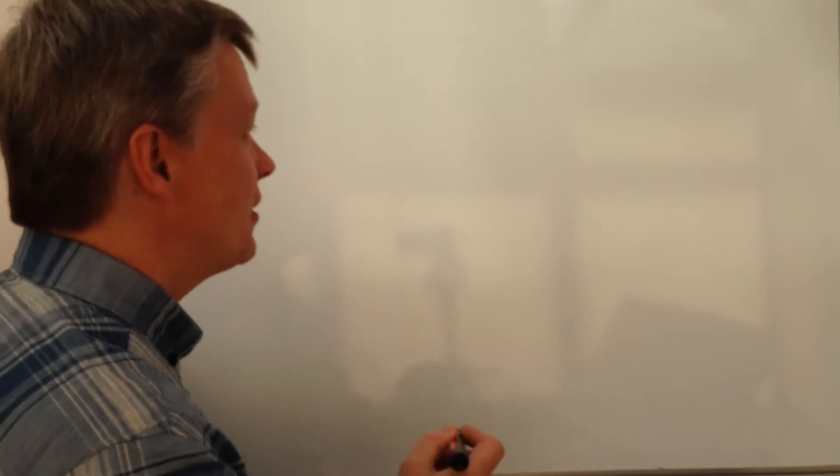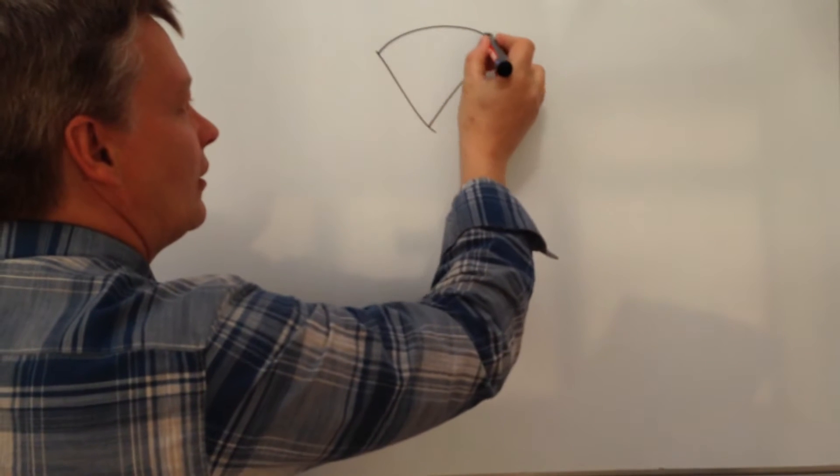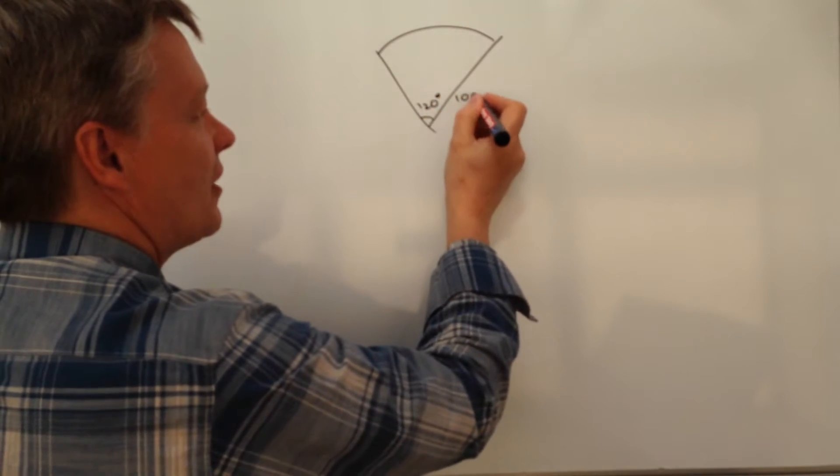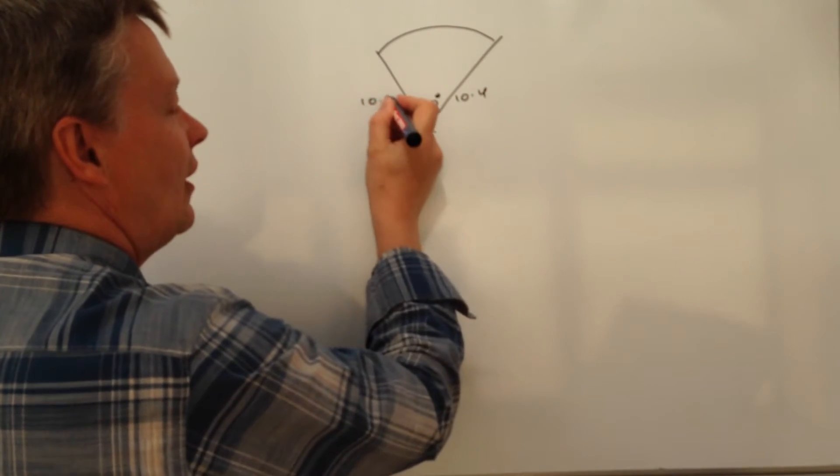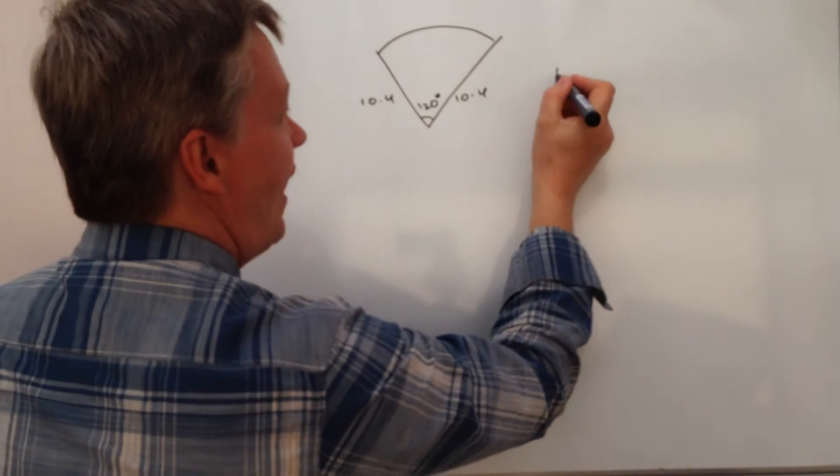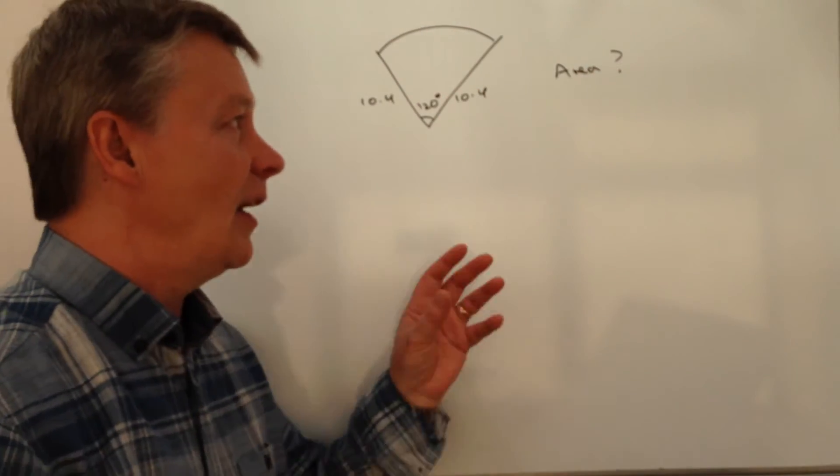And what we've been looking at is something like this, where you've got an angle of say 120 degrees and sides of 10.4. And what you've been asked to do is to calculate the overall area of this particular shape.